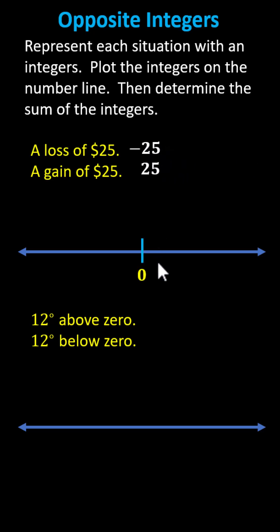Negative 25 is 25 units to the left of zero, and positive 25 is 25 units to the right of zero. Notice these two integers have the opposite sign, but they are the same distance from zero. Both are 25 units from zero, meaning their opposite values are equal.